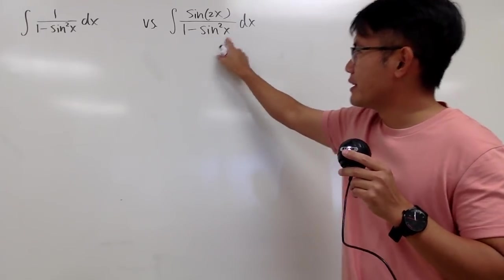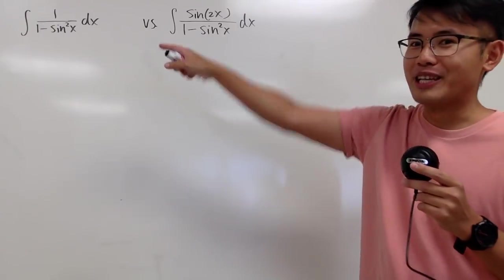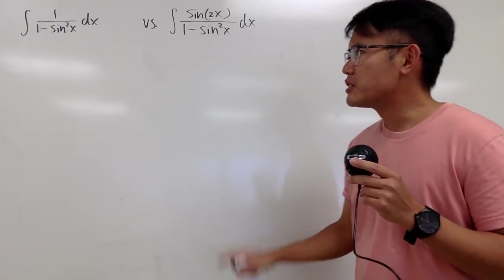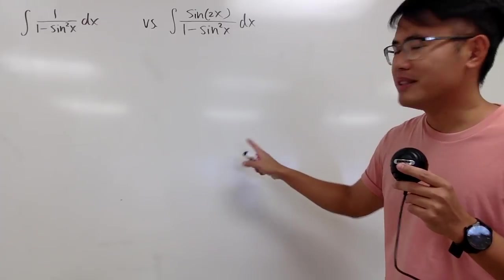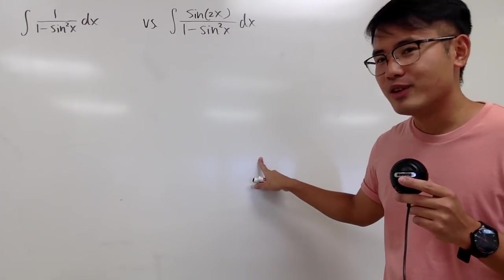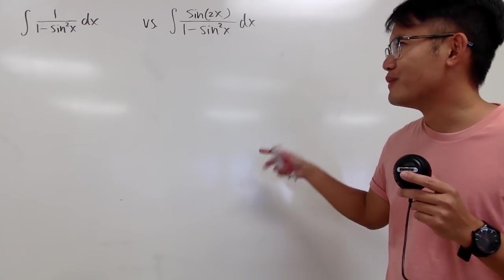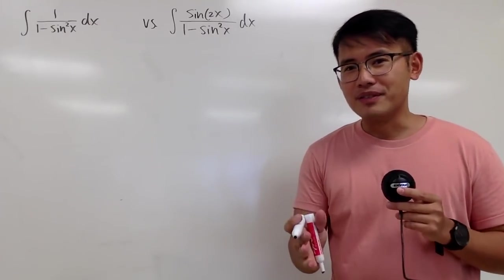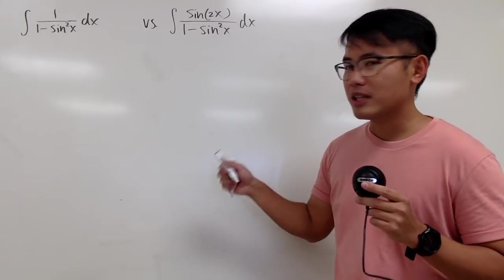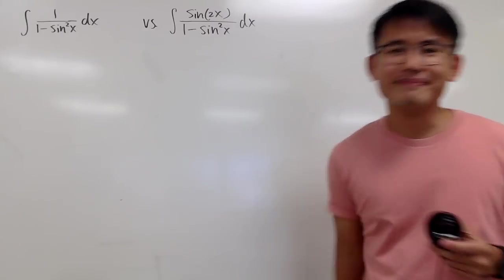And the denominator is still the same. So which one do you guys think is actually easier? Maybe they are both equally hard. Please pause the video and think about them carefully.